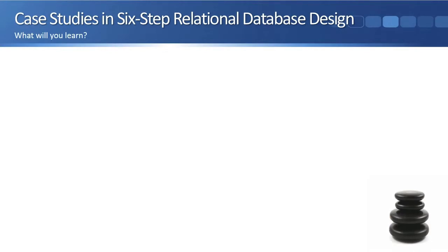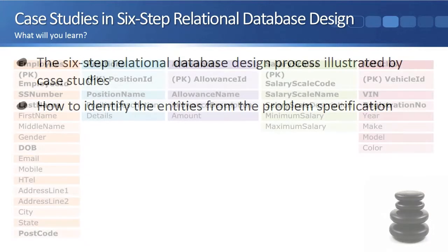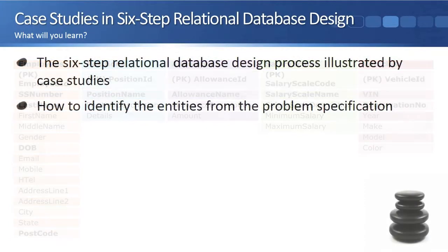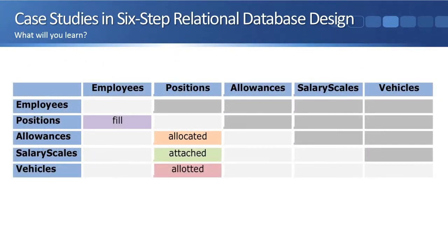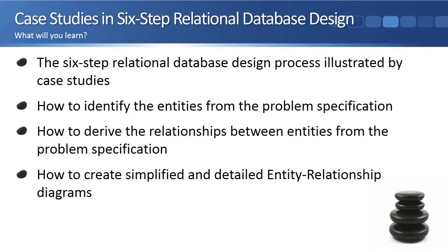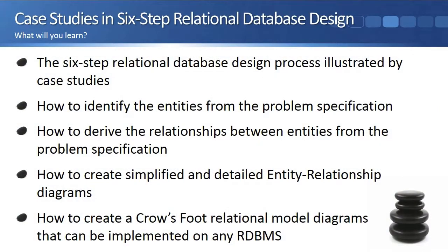The six-step database design process described in this video lecture will outline the six-step relational database design process and then use carefully selected case studies to illustrate how the technique works. You will learn, through the use of case studies, how to identify the entities, how to derive the relationships between the entities, how to create a simplified and detailed entity relationship diagram, and finally how to create the crow's-foot relational model diagram.